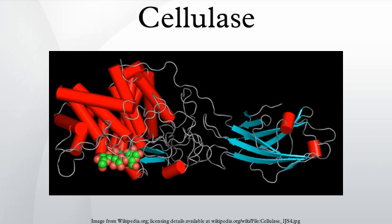Further synonyms include cellodextrinase, cellulase A, cellulosyn-AP, alkali cellulase, cellulase A3, 9.5-cellulase, and pancellulase-SS. Enzymes that cleave lignin are occasionally called cellulases, but this is usually considered erroneous.